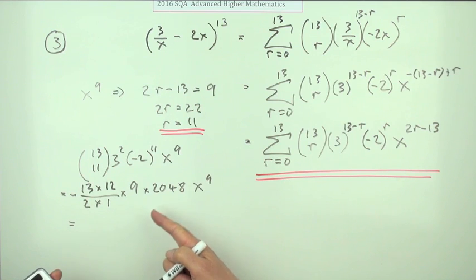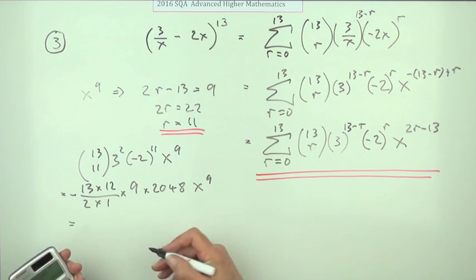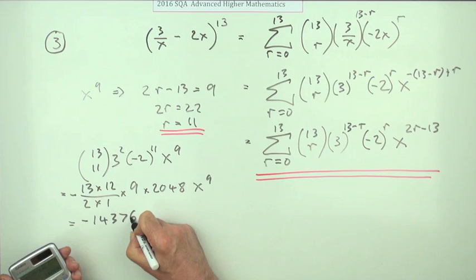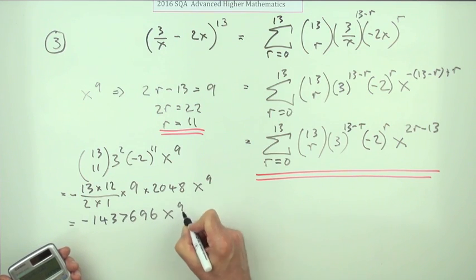So it's 13 times 6 times 9 times 2048 which comes to negative 1,437,696 x to the power 9.